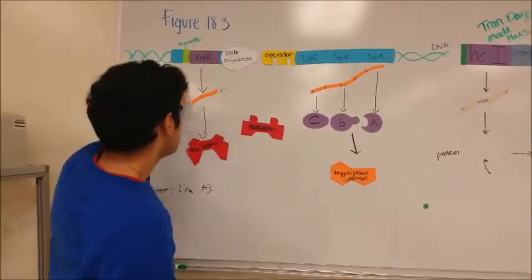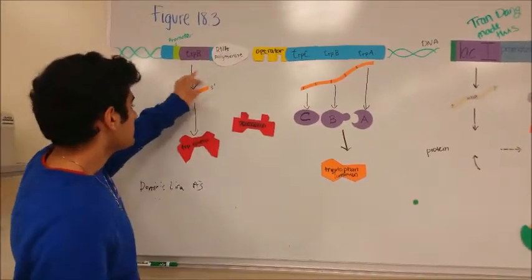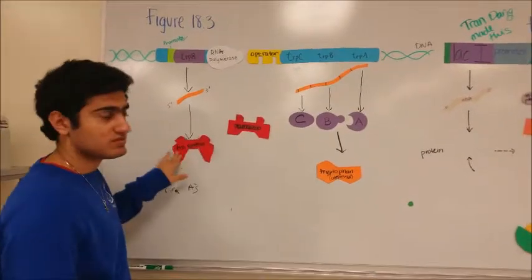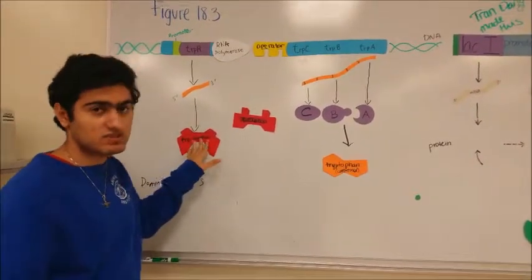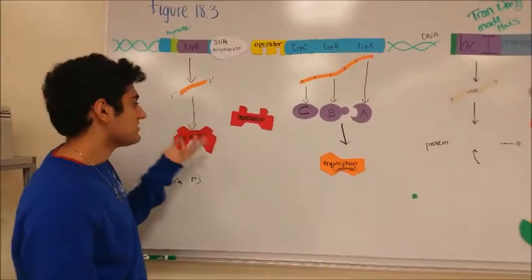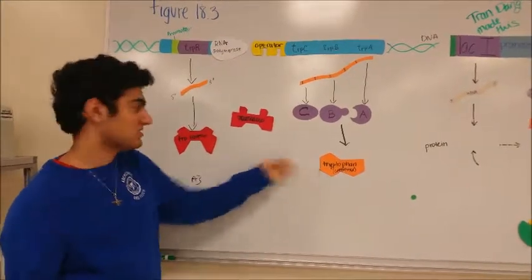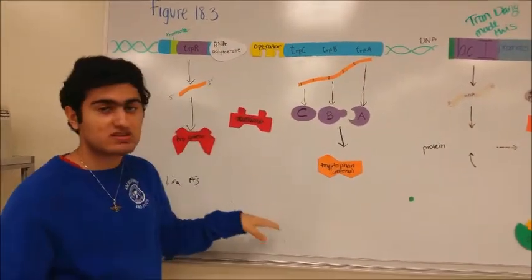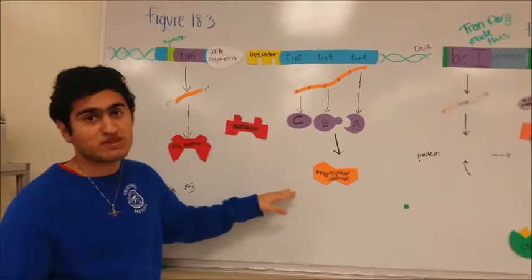At the regulatory gene, it produces an mRNA sequence which codes for a tryptophan repressor. This tryptophan repressor is normally inactive when first created, but becomes activated when tryptophan, the co-repressor, binds to it. It only binds when it detects high levels of tryptophan.